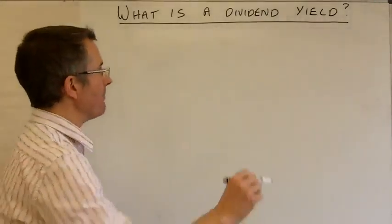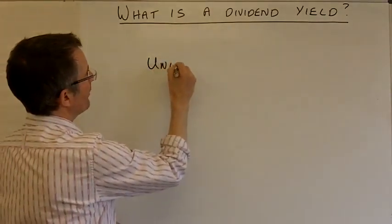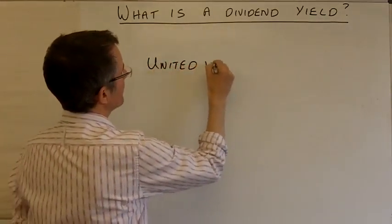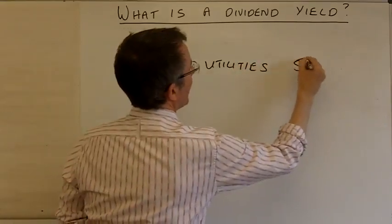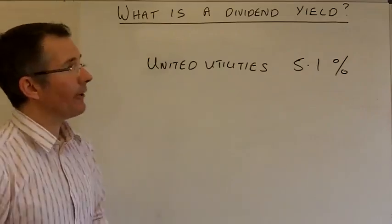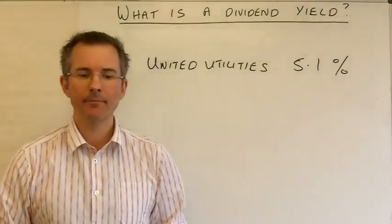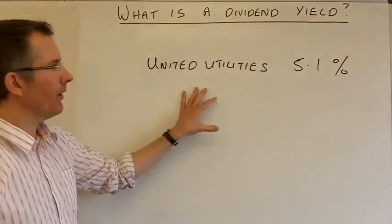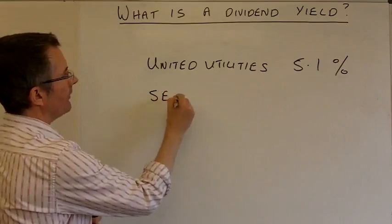Okay. So, I've made my decision. I'm looking at United Utilities, offering a 5.1% dividend yield. That's the annual expected percentage return for buying the shares today. So, maybe what I do is I think, well, this is a utility company. So I wonder how that compares to the utilities sector.